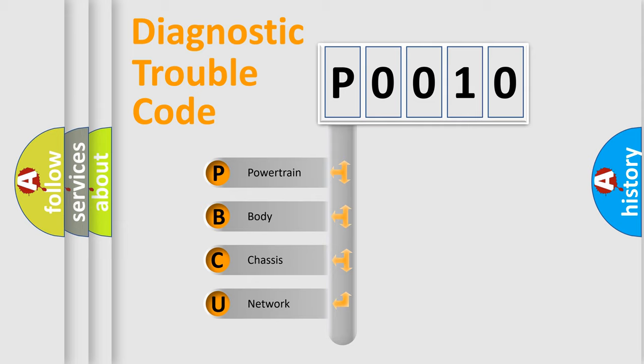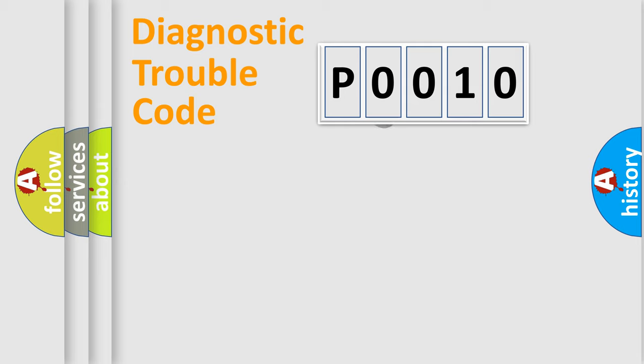We divide the electric system of automobiles into four basic units: Powertrain, Body, Chassis, and Network. This distribution is defined in the first character code.